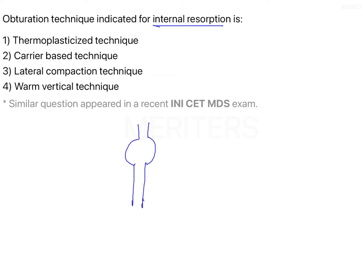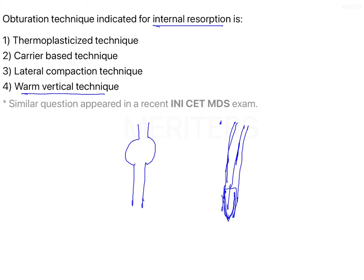For internal resorption, the shape of the lesion is globular. Looking at the obturation options: in warm vertical compaction, you place a GP pellet in the canal, use a warm plugger to condense it — it fills vertically but is not going to flow laterally into the void. So warm vertical technique is out. In lateral compaction, you place multiple accessory GP points, spread with a spreader, and seal the canal — this is also out.